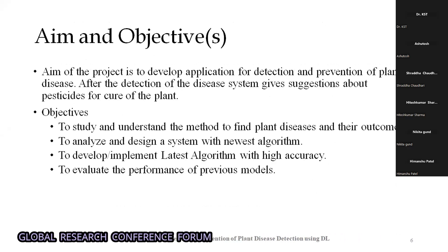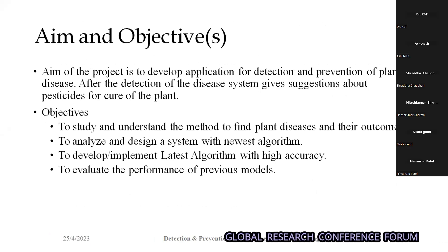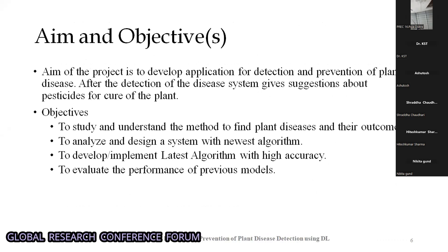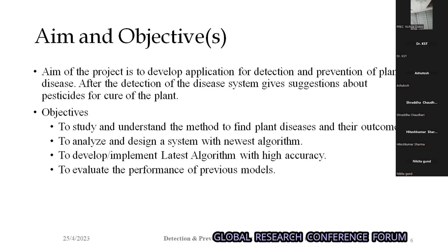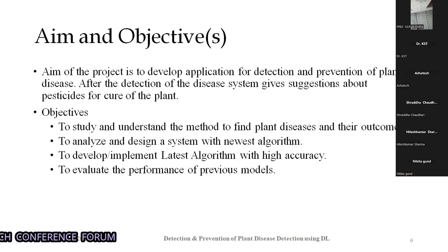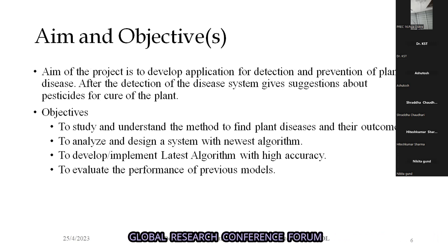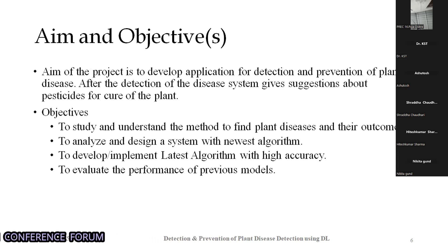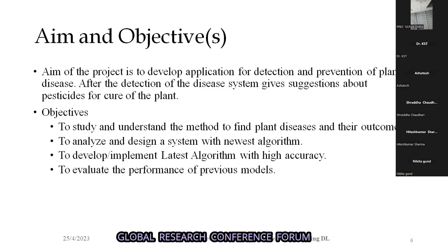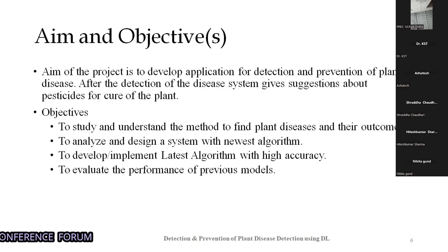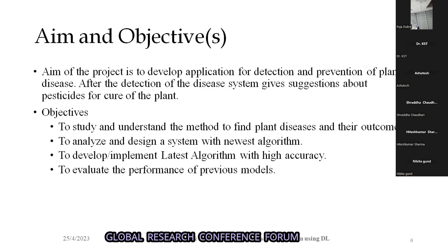The aim and objective is to develop an application for detection and prevention of plant disease. After detection, the system gives suggestions about the best cure for the plant, including supplements and fertilizers. We are going to use the newest algorithm to achieve high accuracy and evaluate performance compared to previous models, which had lower accuracy or could handle fewer species of plants. We are now trying to increase both accuracy and the number of plant species and categories.